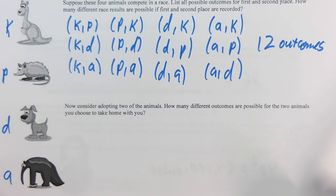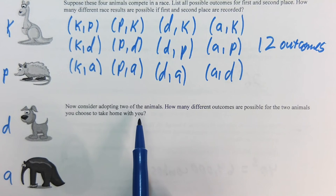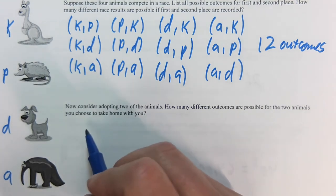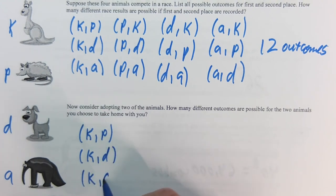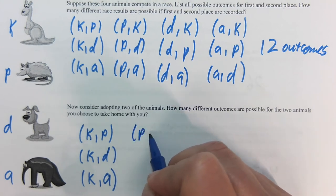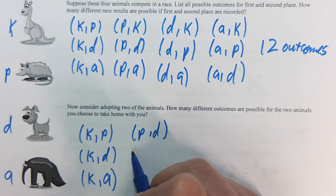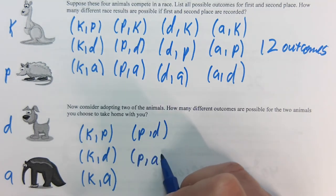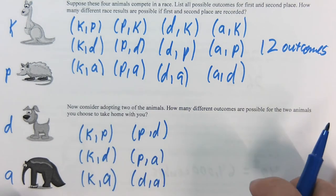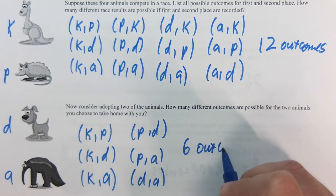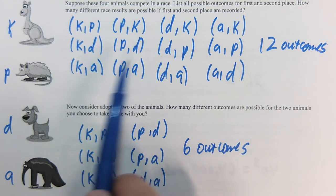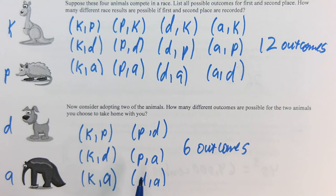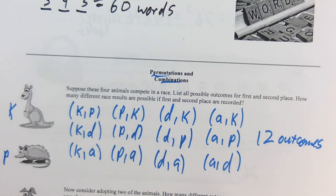That's different now compared to our second scenario here. Now we're going to adopt two of them, but the order doesn't matter. If I pick the possum first or the kangaroo first, it does not matter. It's the same combination. So we're not going to repeat in this case. So the combinations are the kangaroo and the possum, the kangaroo and the dog, the kangaroo and the anteater. Then we have the possum and the dog. I'm not going to include the possum and the kangaroo like I did up here because that's the same in this case. The possum and the anteater, and the last one is the dog and the anteater. You'll notice that this only has six outcomes. Be careful, it's not always half. It just happened to work out that way in this case. But you can see when the order matters, it's very different than when the order doesn't matter. That brings us to our permutations and combinations, which is our next topic.